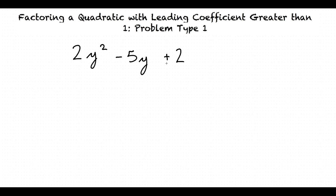So the next step we will take is to multiply the first term, 2y squared, by the third term, 2. The first term 2y squared is sometimes referred to as a, and the third term 2 is sometimes referred to as c. So we multiply them together — 2y squared times 2 — and we get 4y squared.